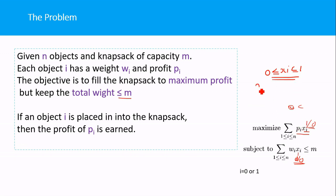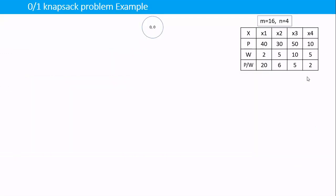In the 0/1 knapsack problem, xi can only be 0 or 1. First I will show the backtracking method to solve the problem, then in the next lecture I will discuss the algorithm. We have four items and a knapsack capacity of 16. I have arranged the items according to their profit-by-weight value. In the backtracking algorithm this arrangement doesn't strictly matter, but in a greedy algorithm you must arrange items in profit-by-weight order to get the optimal solution.